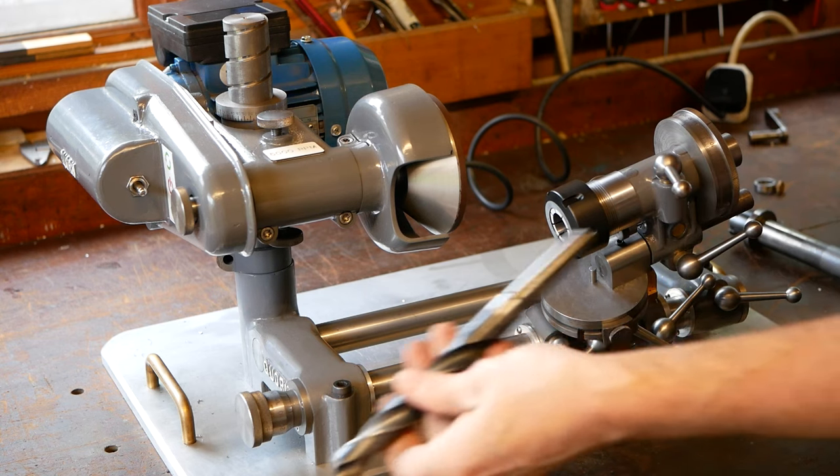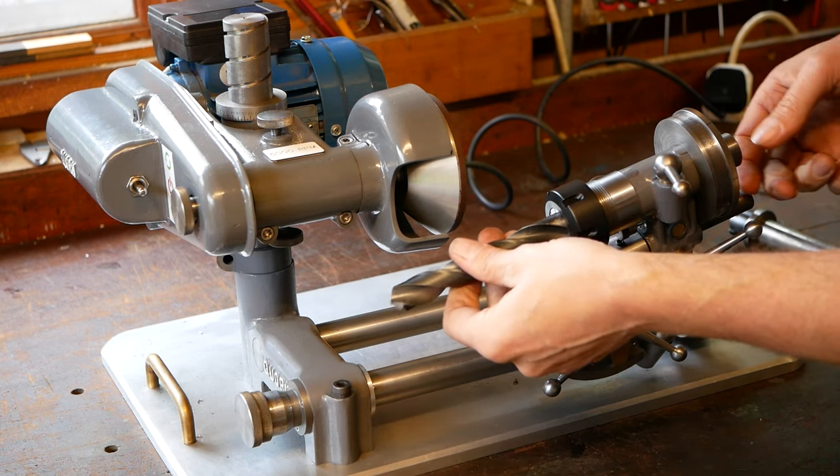The ER32 collet modification allows drill bits up to 20mm to be ground.